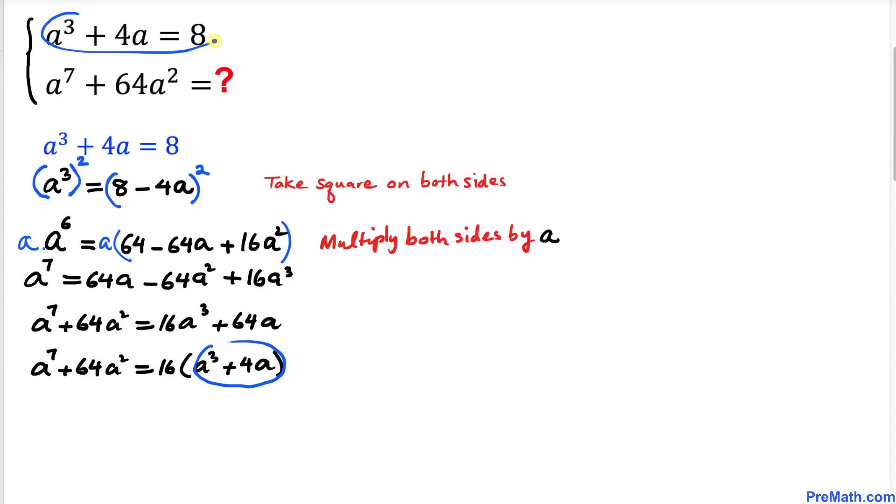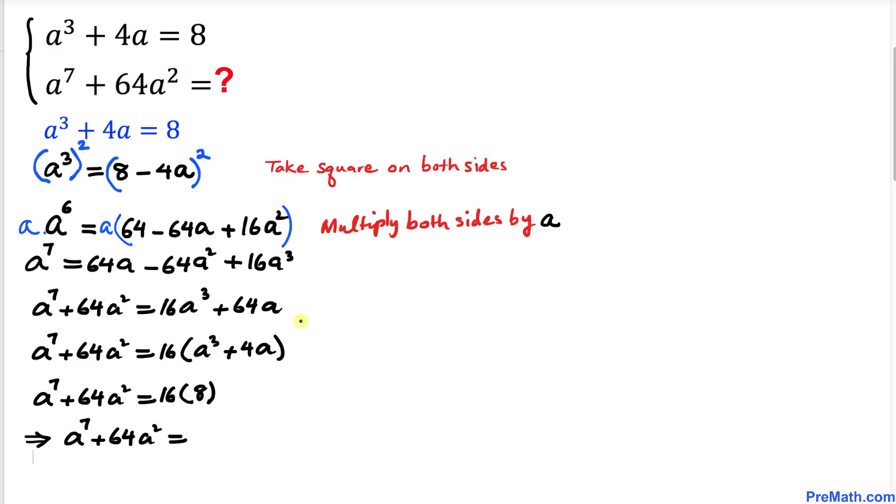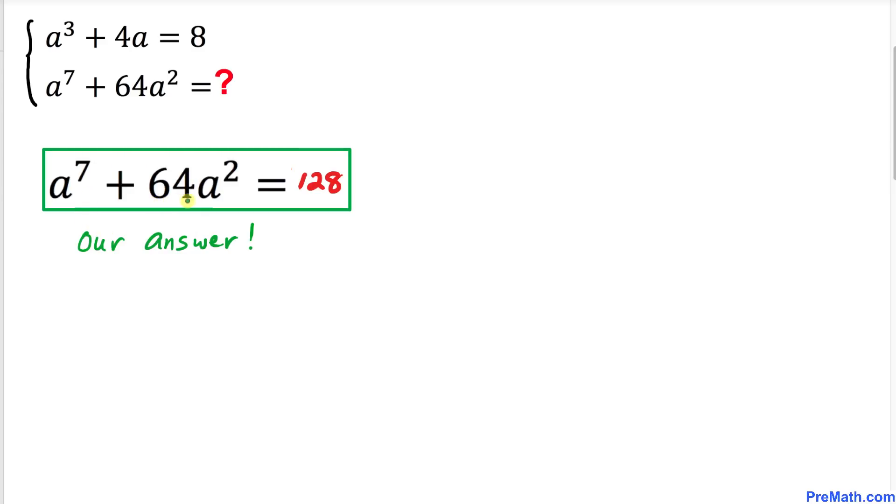So therefore I can write 16 times, I am going to replace this by 8, so I can write times 8. Thus, a⁷ + 64a² turns out to be 16 times 8, which is 128. So a⁷ + 64a² = 128, and that's our final answer.